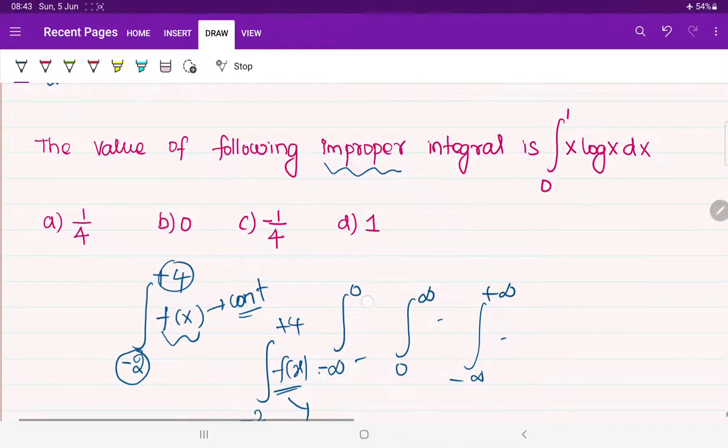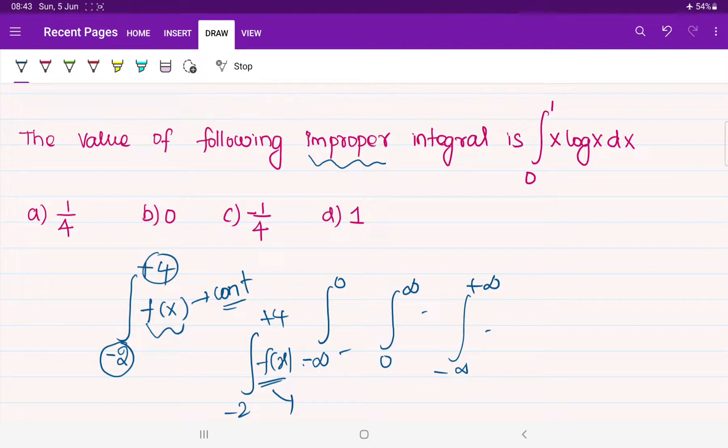Now, in this case, if you observe, we are going from 0 to 1. If we draw the graph for x into log x, they will be giving you certain discontinuity. So your function should be continuous and your limit should be finite in order to obtain the proper integration. Improper integral means either your function might have discontinuity or your limits might be approaching infinity.